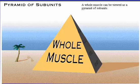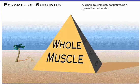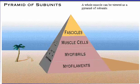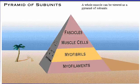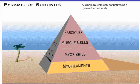In summary, a whole muscle can be viewed symbolically as a pyramid of subunits. A whole muscle is composed of many smaller units called fascicles. Each fascicle in turn contains numerous muscle cells, also called muscle fibers. And as we have seen, each cell is composed of many additional subunits called myofibrils. The smallest and most numerous of all subunits are the myofilaments, which are found within the myofibrils.